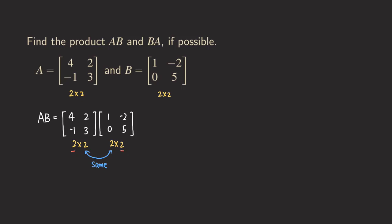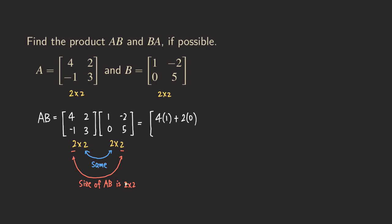The outer numbers tell us the size of the product. So the size of AB is 2 by 2. Now we are ready to do the matrix multiplication. Since we have a 2 by 2 result, we just need to fill in four blanks. We take the first row and multiply by the first column, multiplying corresponding entries: 4 times 1 plus 2 times 0. That is our (1,1) entry for AB.